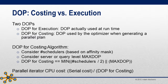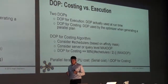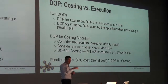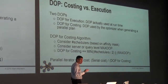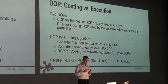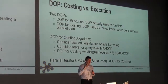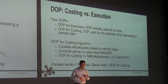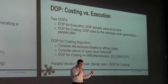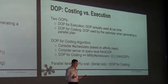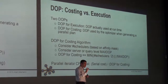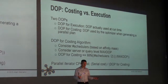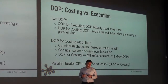When the optimizer is coming up with its plan, there are two costs in every iterator in a query plan: a CPU cost and an IO cost. What the optimizer does to decide whether to use a parallel plan is it takes a serial version of the plan, takes all the CPU costs, divides them by this DOP for costing value, then adds a little bit of additional cost for the parallelism iterators. If the resultant parallel plan cost is lower than the serial plan cost, it generates a parallel plan; otherwise it keeps you with a serial plan.